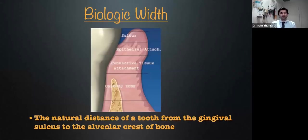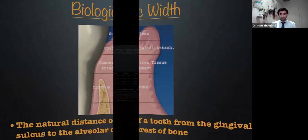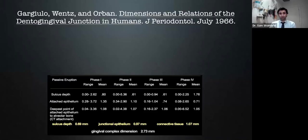As we discussed last time, biologic width is the natural distance from the sulcus down to the alveolar crest of bone. The number we always learned in school is three millimeters: the sulcus is about one millimeter, the epithelial attachment is one, and the connective tissue attachment is one — totaling three millimeters. Where did that number come from? This classic periodontal study from the mid-to-late 60s used cadaver measurements for each factor and developed mean values: connective tissue 1.07, epithelial attachment 0.97, sulcus 0.69, totaling about 2.73 — which was rounded up to three millimeters.